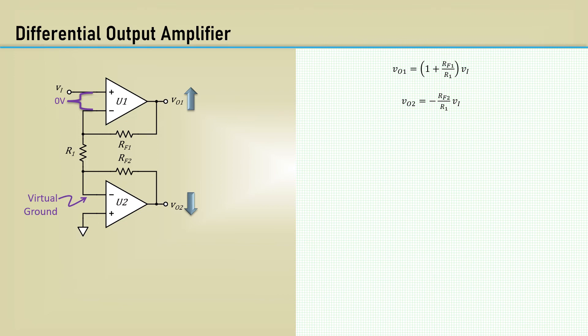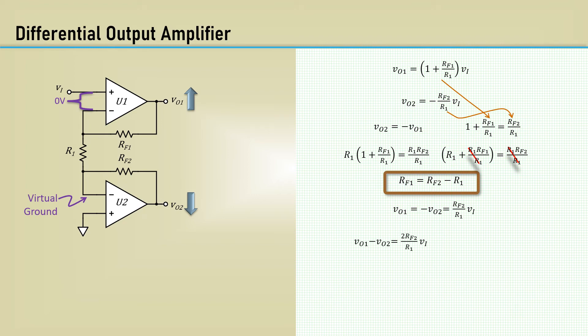In most applications of the differential output amplifier, the desired condition is where VO2 equals minus VO1. When this is satisfied, the amplifier is said to be a balanced differential output amplifier. This requires the condition where 1 plus RF1 over R1 equals RF2 over RF1. Multiplying each side by R1 reduces to RF1 equals RF2 minus R1. Each output voltage can be written with this expression. The difference between the two is each voltage doubled. Rearranging in terms of gain yields 2 RF2 over R1.